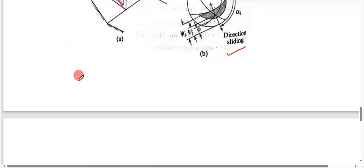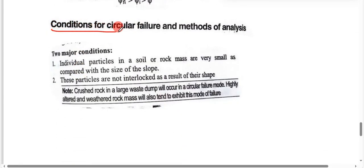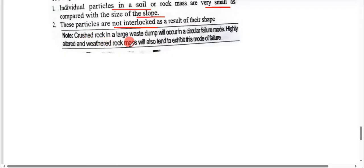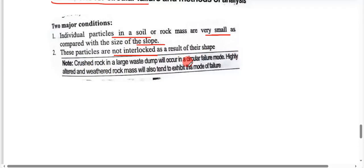General conditions of circular failure: Number one, individual particles in a soil or rock mass are very small compared with the size of the slope. Number two, these particles are not interlocked. A large waste dump will occur in the circular failure mode. Highly altered and weathered rock mass will also tend to exhibit this mode of failure.